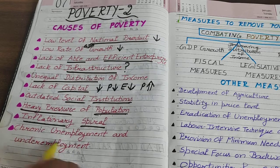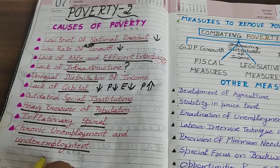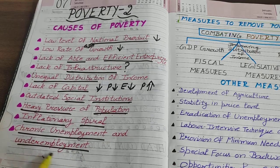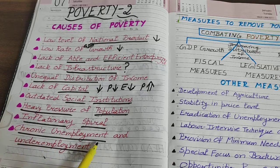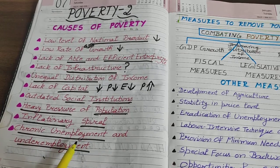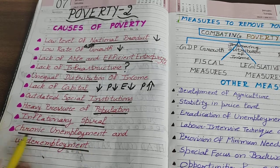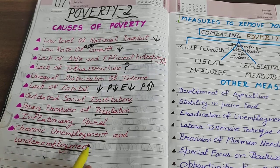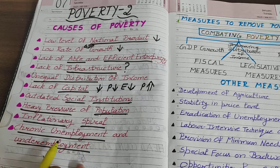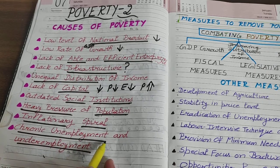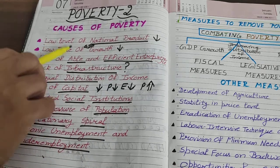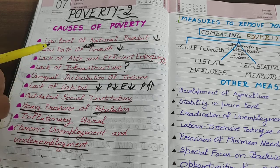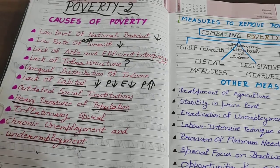The next point is chronic unemployment and under-employment. The main reason for poverty in our country is unemployment — people simply don't have work. Chronic unemployment means a problem for which no solution is being found. Due to unemployment or under-employment, people are poor; without work, they have no money even for food. These are the causes of poverty — a very important question from the board exam point of view, worth four or six marks.